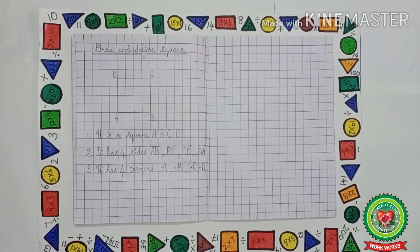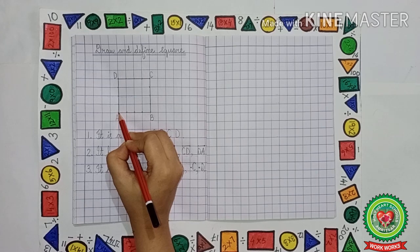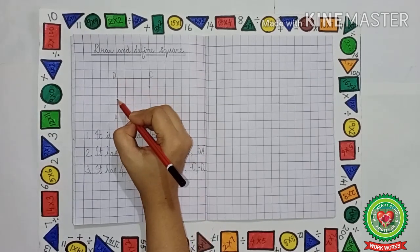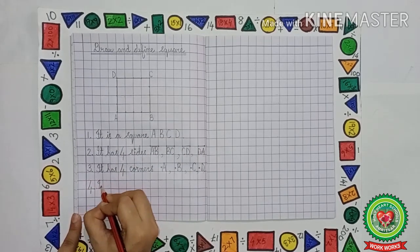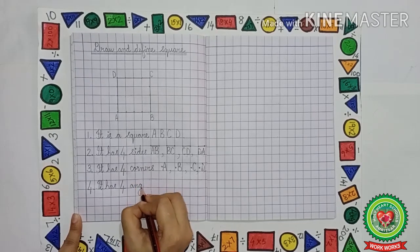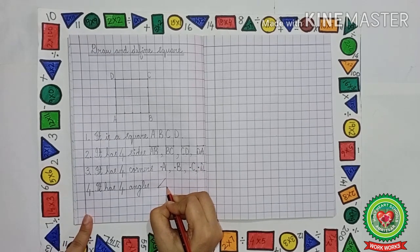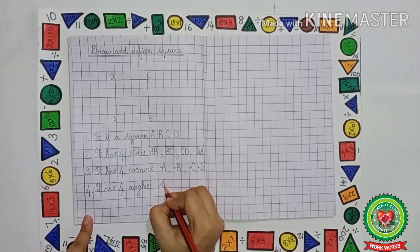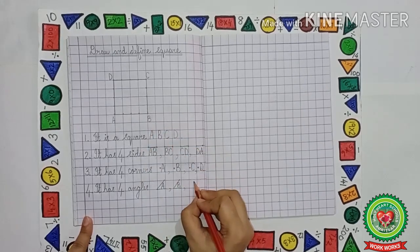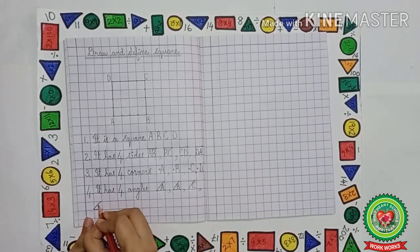Next point is: it has how many angles? When two lines meet at a point, that point is known as an angle. So it has four angles. The symbol of angle is used, and the names are angle A, angle B, angle C and angle D.